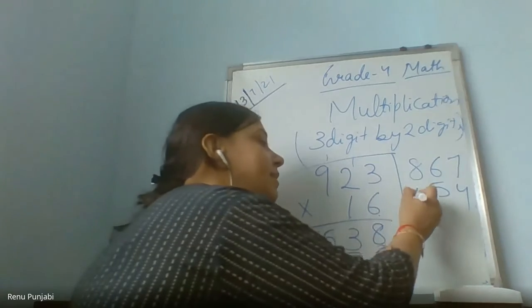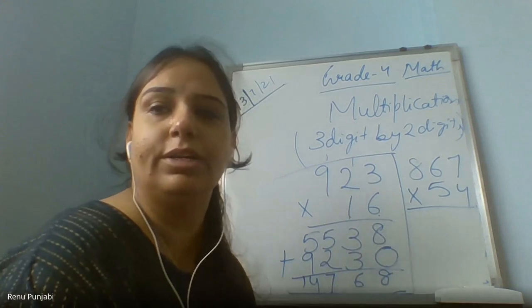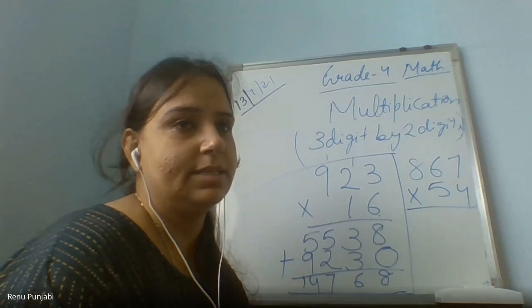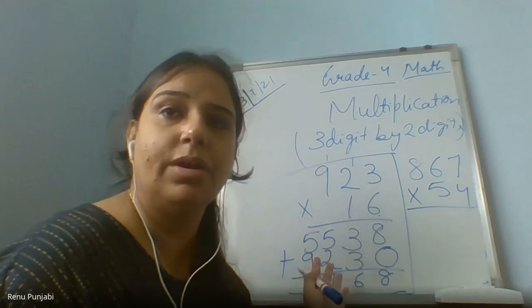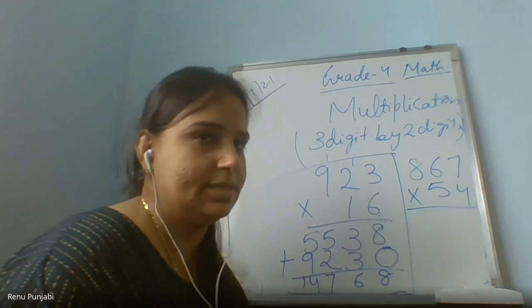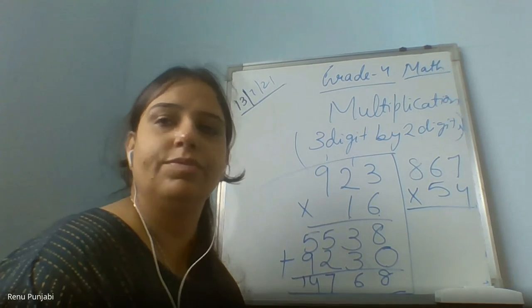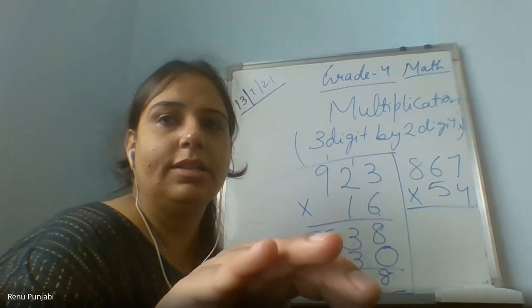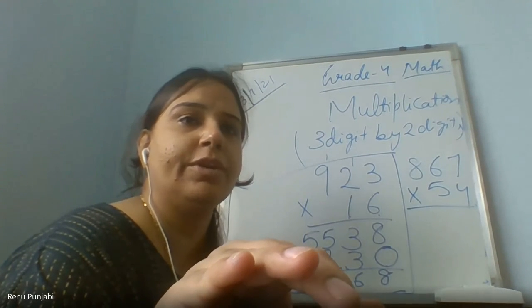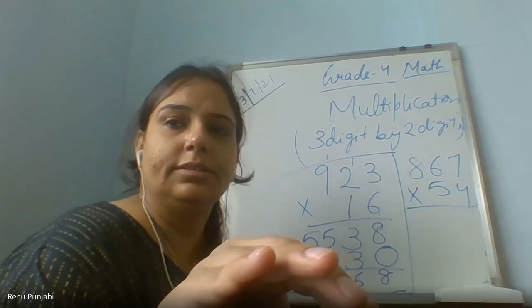867 multiplied by 54 — note down the question and you can do it later and tell me the answers tomorrow in class. I will send the worksheet based on multiplication and the worksheet based on today's concept — the conversion of time. The multiplication worksheet goes in the revision notebook, or you can take a printout. Thank you. Be ready with your revision notebook every day.